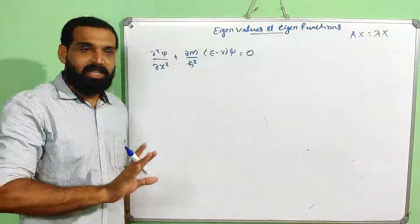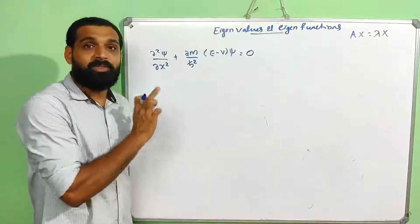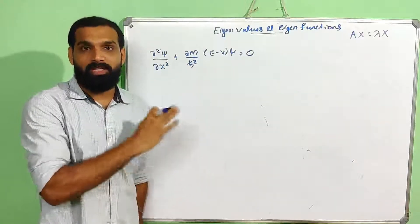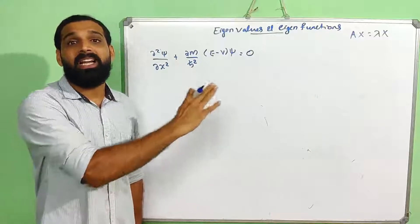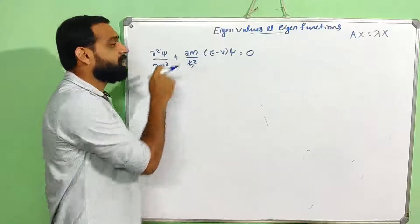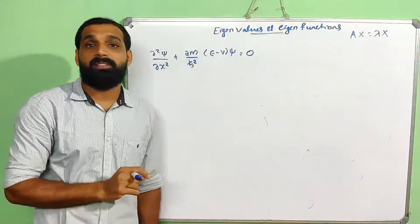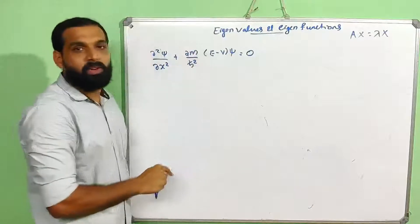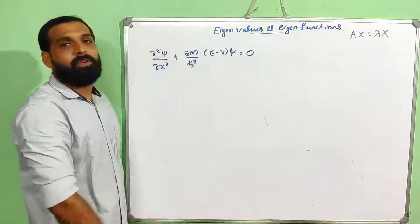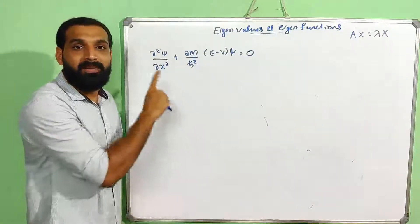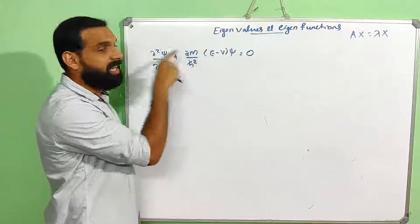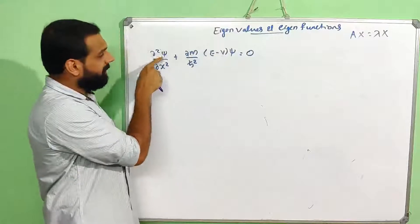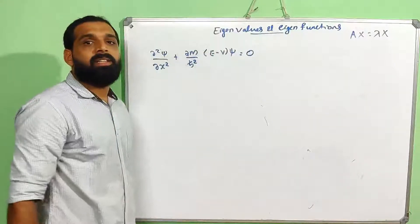The values of energy E for which the steady state form of Schrödinger's equation can be solved are called energy eigenvalues, and the corresponding wave functions are called energy eigenfunctions.